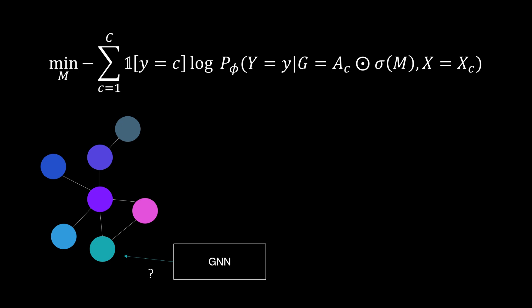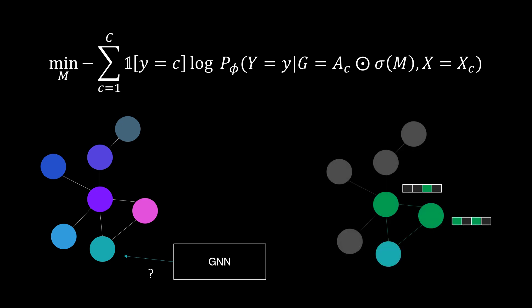For the previous example, this might look like this. A subgraph highlighted in green here that contains all the nodes that were relevant. Furthermore, for the node features of these nodes, we get a subset as well. This provides a pretty clear picture of why the model made a certain prediction.